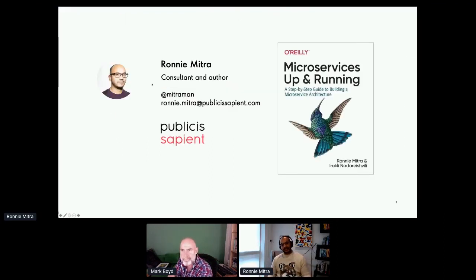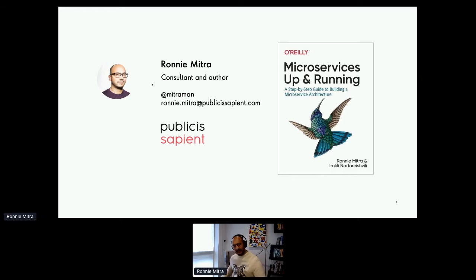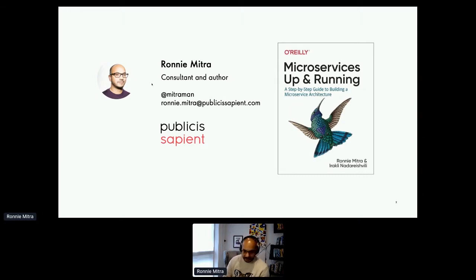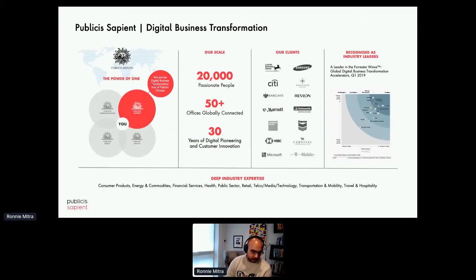I'm Ronnie Mitra. One of the things I've done recently is co-authored the book 'Microservices Up and Running' with Irakli Nadareishvili, also presenting at this conference. It's a step-by-step guide to building a microservices system, starting from nothing and ending up with a Kubernetes-based, AWS-hosted microservices system — very opinionated and prescriptive. I'm an employee of Publicis Sapient, a digital transformation company that helps companies and banks transform their businesses through technology.